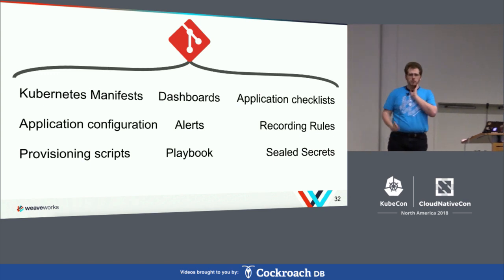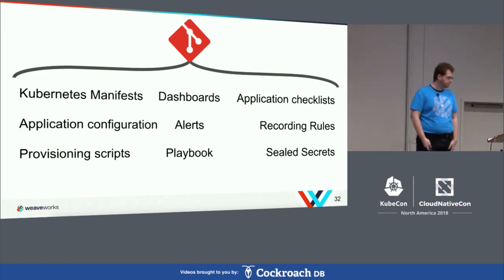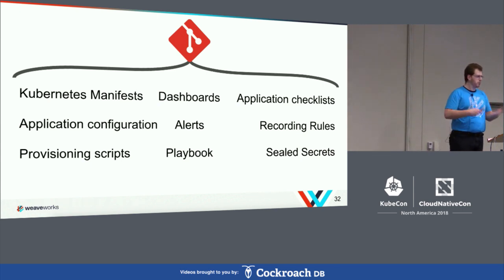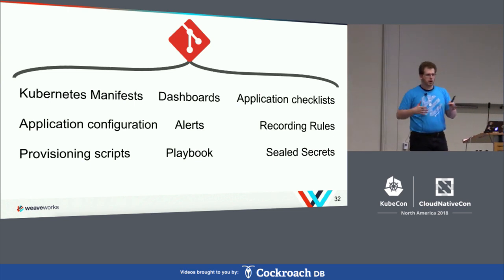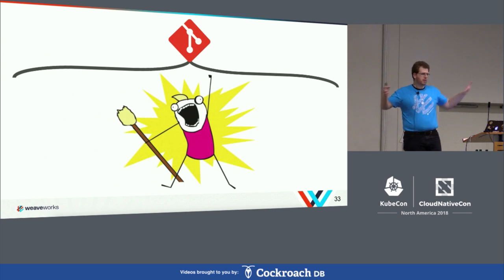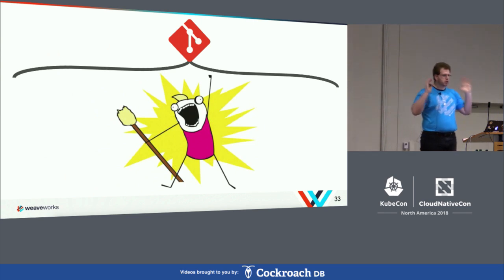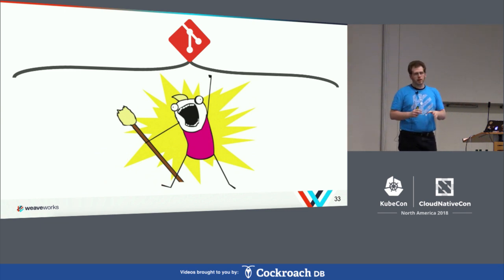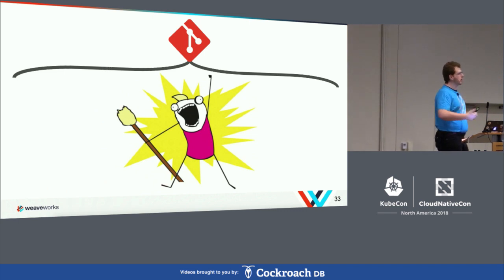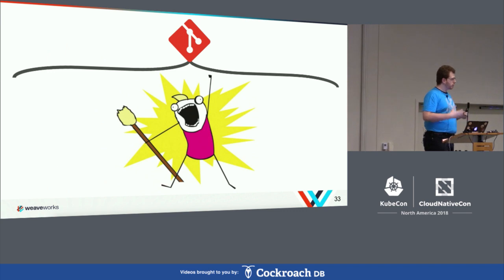Recording rules — things to do with Prometheus and monitoring — also belong in Git. And sealed secrets: if you look up Bitnami Sealed Secrets, that's a way of doing secrets management using the GitOps approach. Everything — your entire system should be in Git. You should be able to have a complete view of your entire system and reproduce the entire thing in a new environment with a few clicks. If you have a problem recreating your system including alerts and process steps, you're no longer in control.